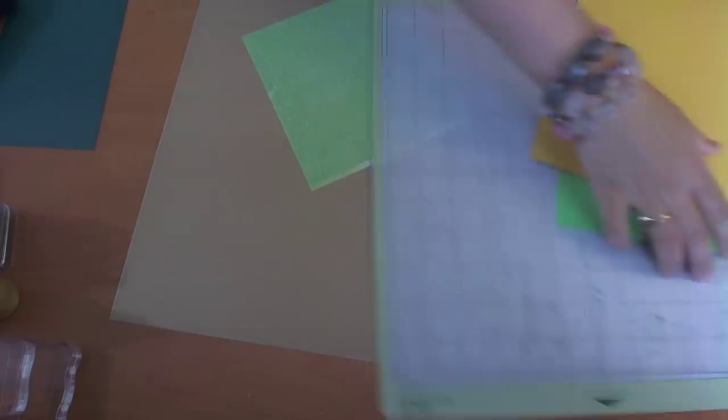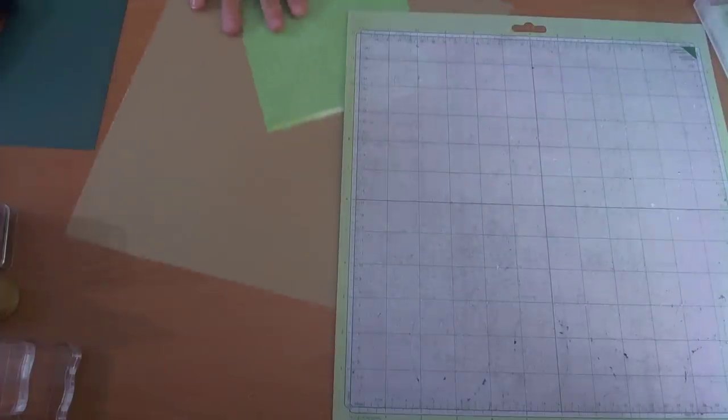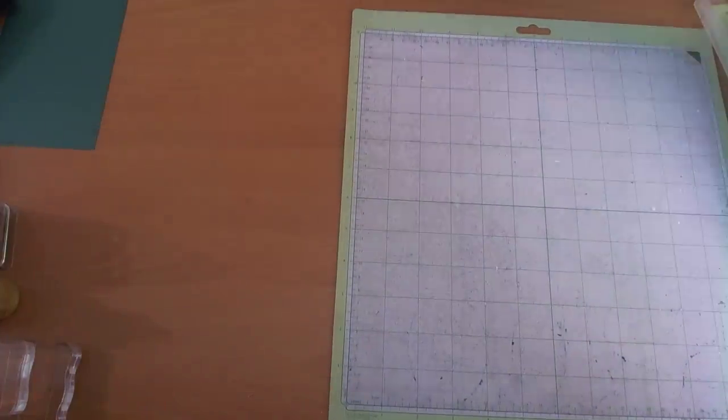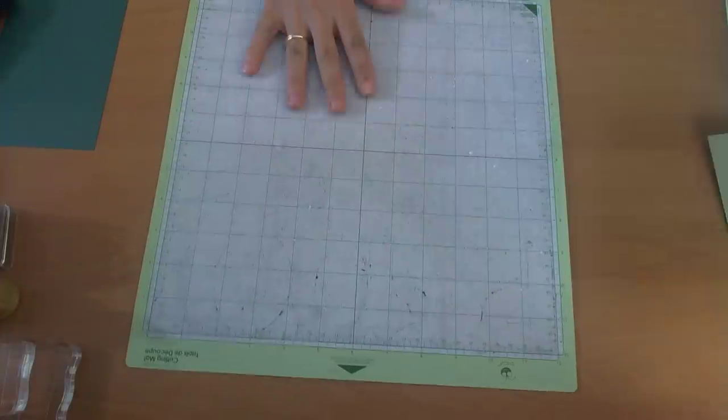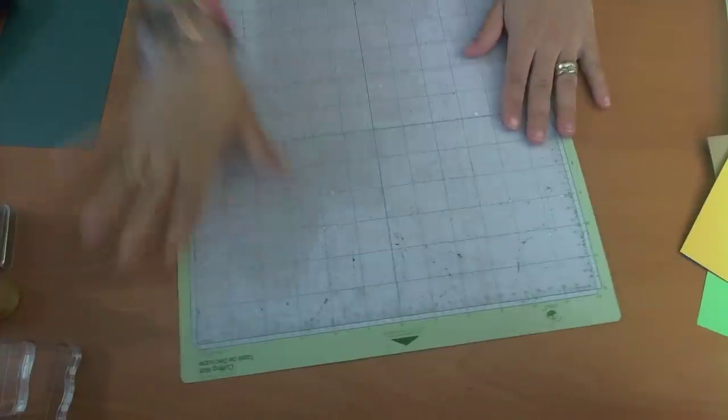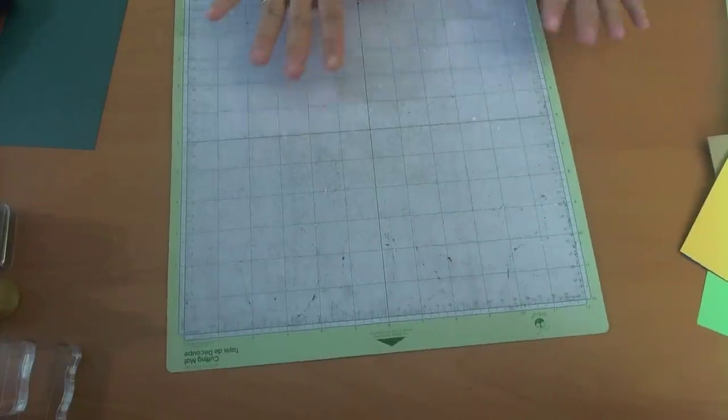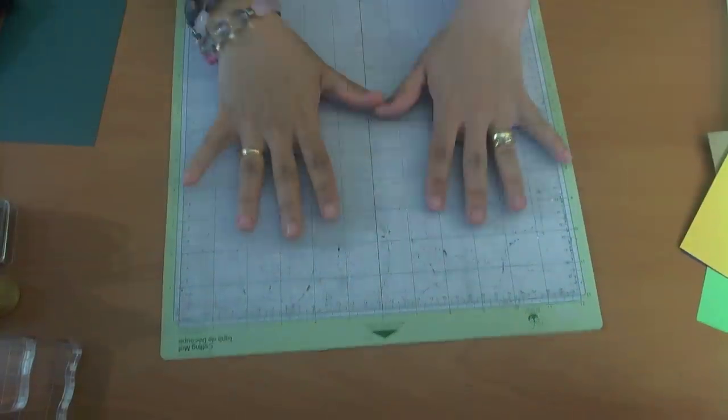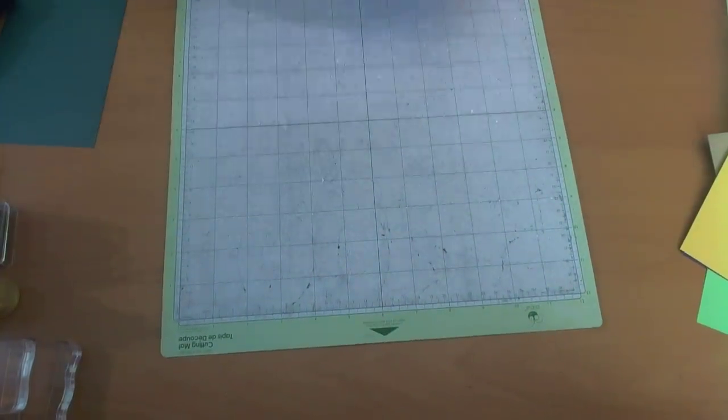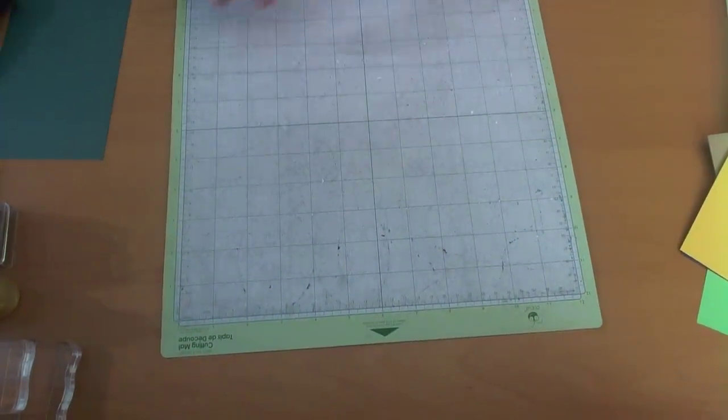Alright, so what I decided to do first was to cut my paper into the sizes that I needed, because I don't want to put a whole sheet on here because I learned that when you do that it tends to take out the stickiness. So what I'm going to do is cut all the colors that I chose.